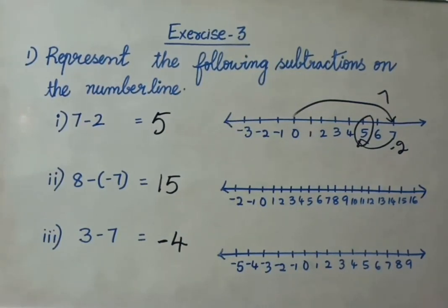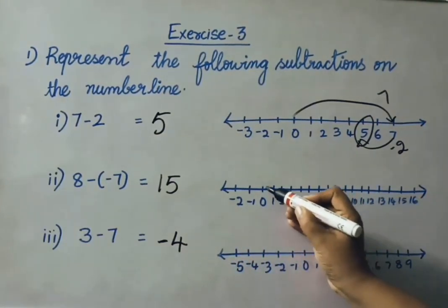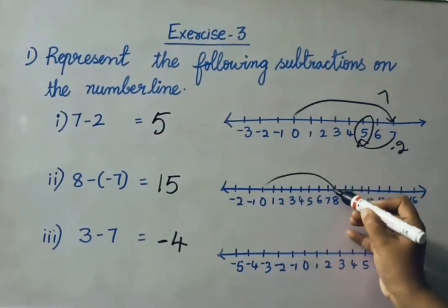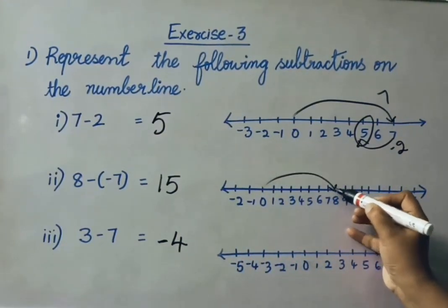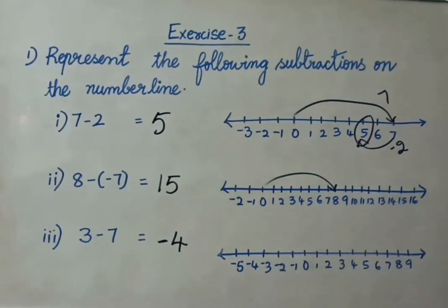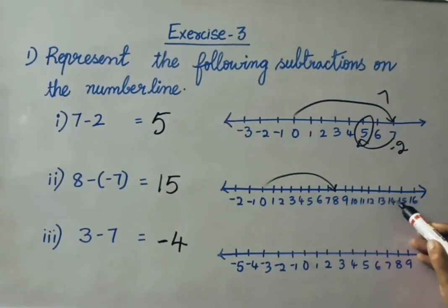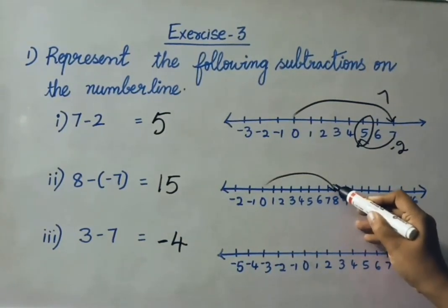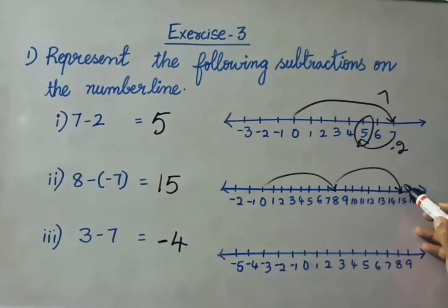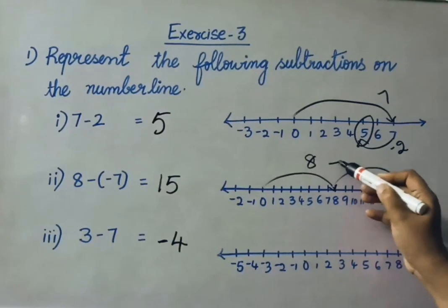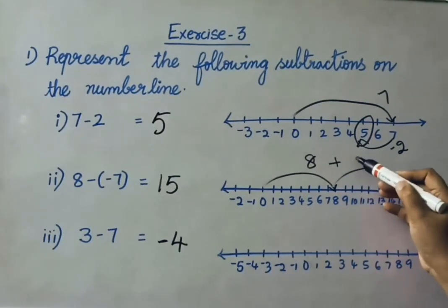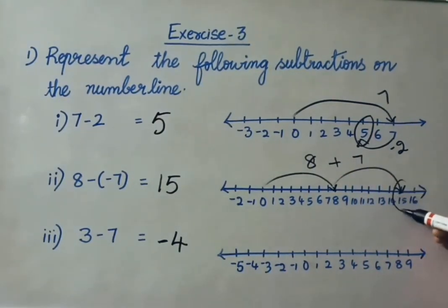See the second one: 8 minus of minus 7 — that means 8 plus 7 equals 15. Let us show this on the number line. First show 0 onwards 8, then move right 7 numbers — 1, 2, 3, 4, 5, 6, 7 — so from 8 onwards we mark 15. So 8 plus 7, we got 15 as the answer.